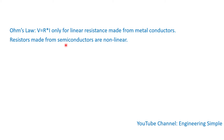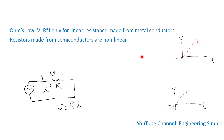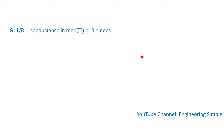Resistors made from semiconductors are nonlinear. As you can see in the first sketch to the right, the relationship between voltage and current is linear for a resistor, whereas for a semiconductor the relationship is not linear. So if it's not linear, Ohm's law cannot be applied.